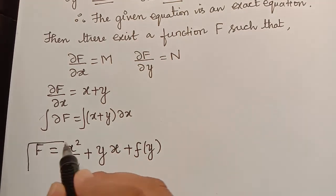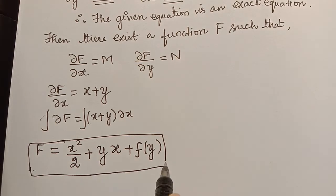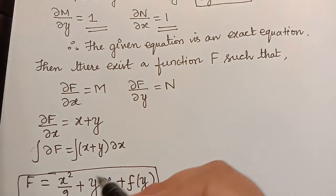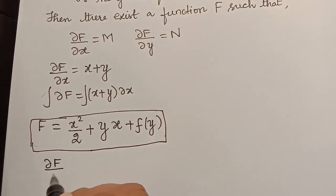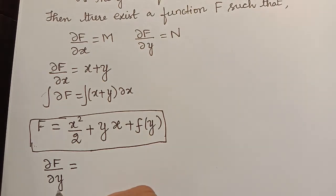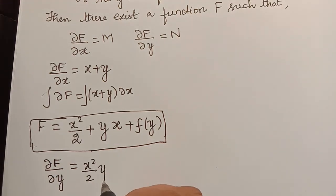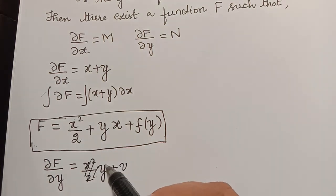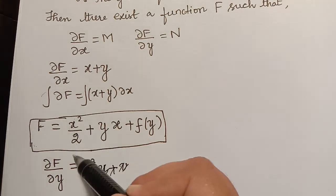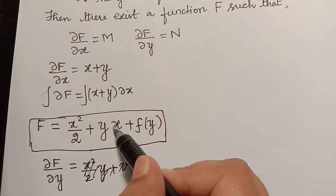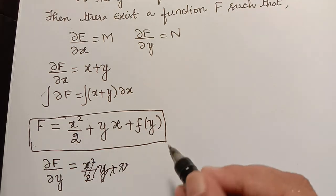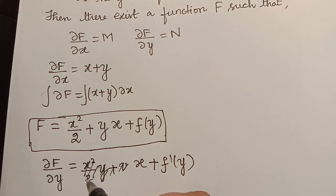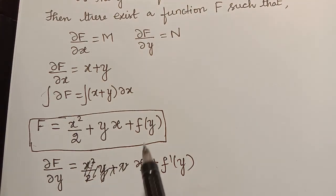Now we evaluate f(y) by using the condition ∂F/∂y = N. Differentiating F = x²/2 + yx + f(y) with respect to y: x²/2 treated as constant gives 0, yx differentiated with respect to y gives x (since x is constant), and the differentiation of f(y) gives f'(y). So ∂F/∂y = x + f'(y).